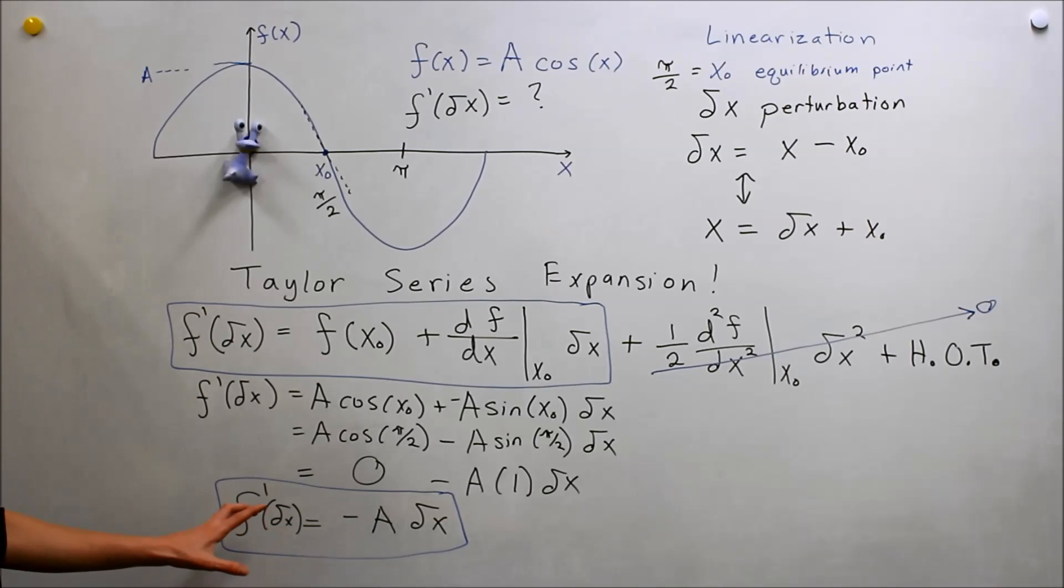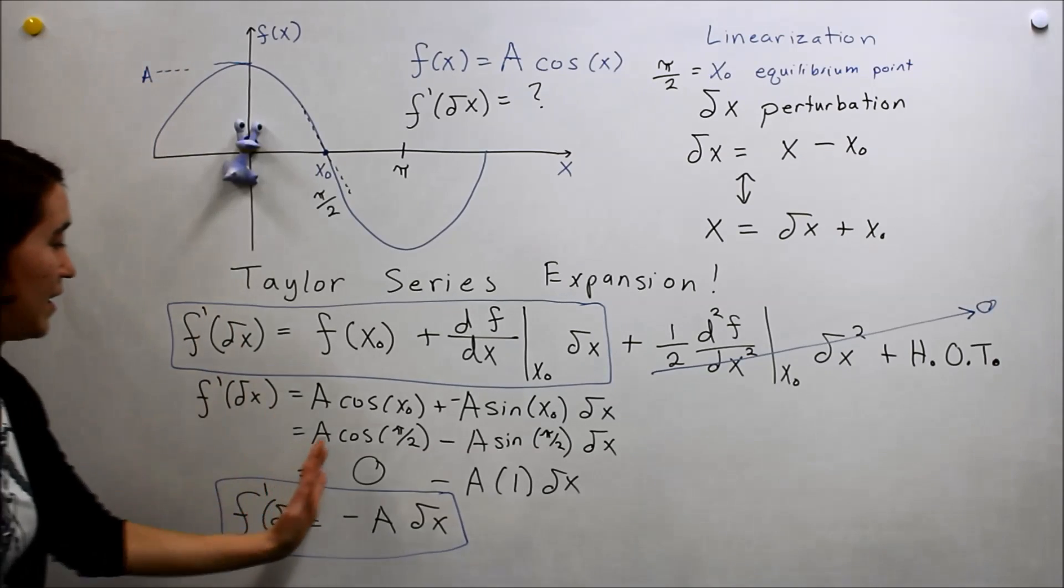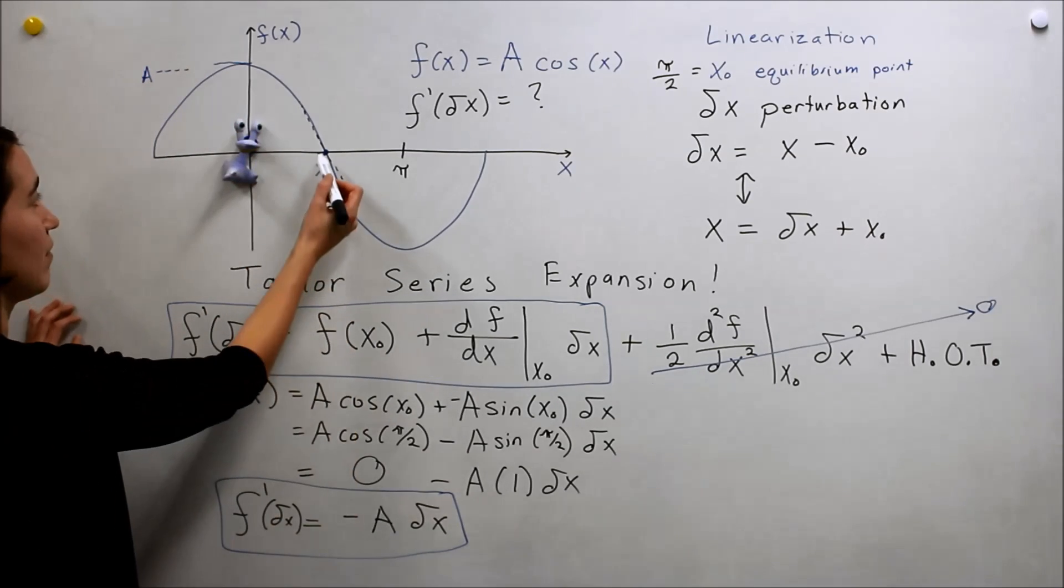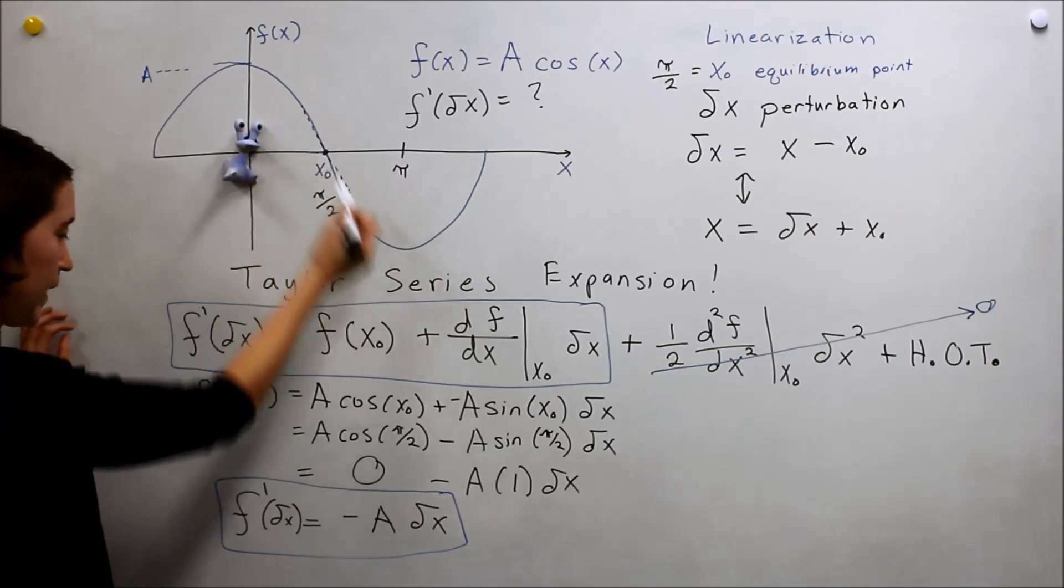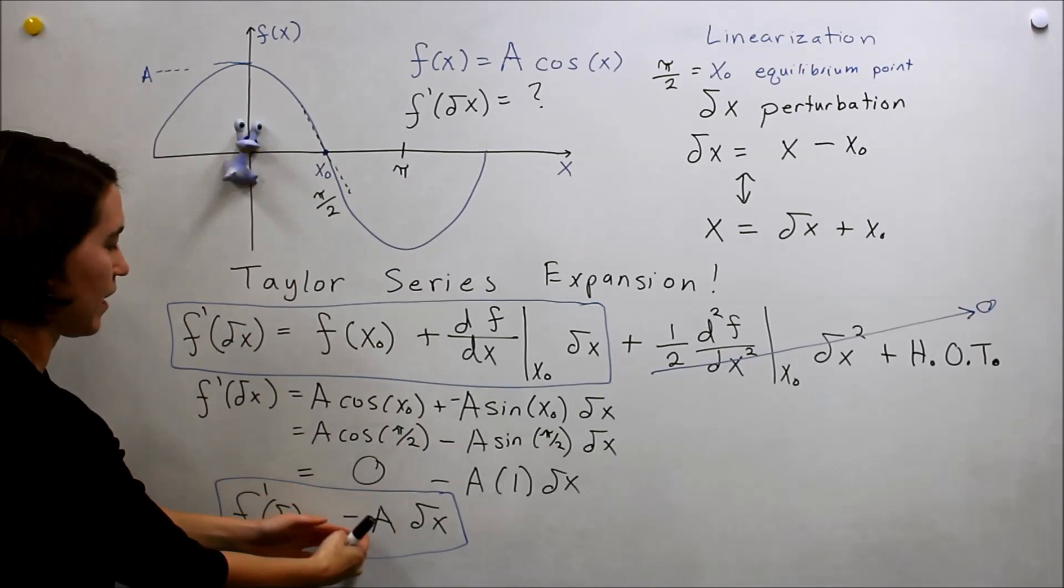And we think about this. While this is negative A, our A value will be positive, so it's a negative slope. And yeah, this point has a negative slope.